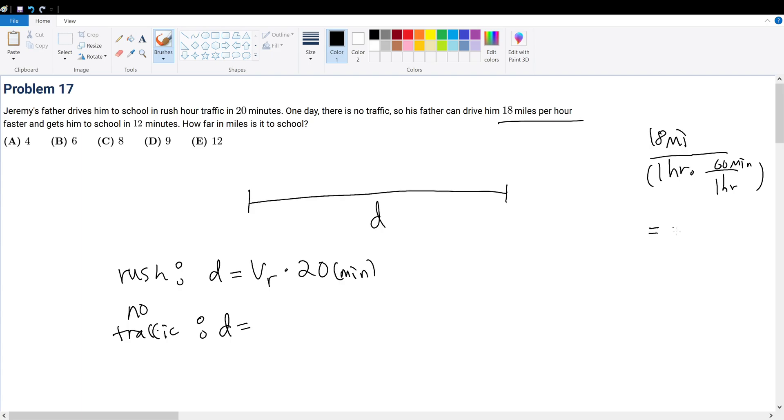So we can simplify this into terms of miles per minute. So that is 18 divided by 60, which is the same thing as if we divide it by 3, we get 3 times 6 and 3 times 20. So that's equal to 3 over 10, 3 over 10 miles per minute.